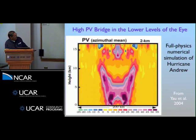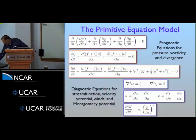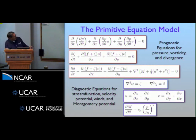What Eric did was try to simulate this PV bridge, which occurs in the lower levels around three kilometers, through an adiabatic mixing process using a primitive equation model. It's an adiabatic model, so it's not really a hurricane—it's really idealized.